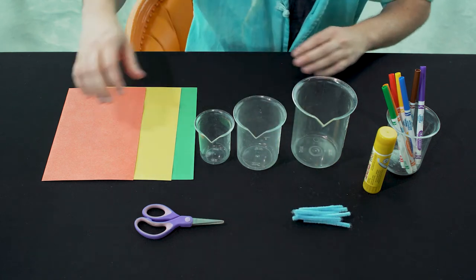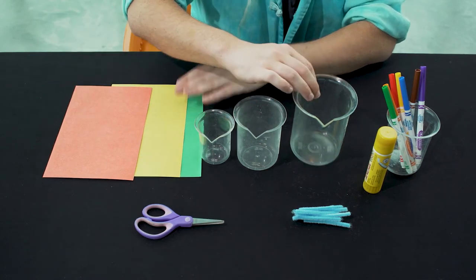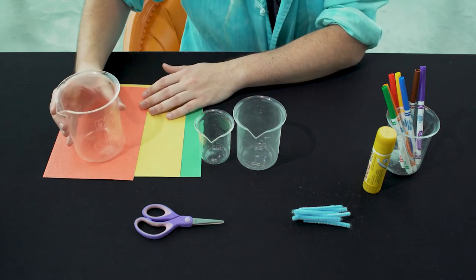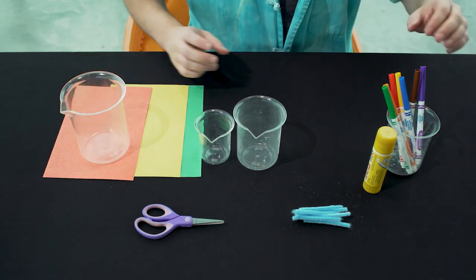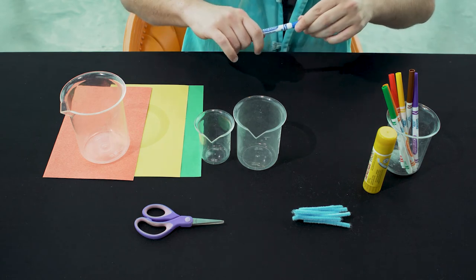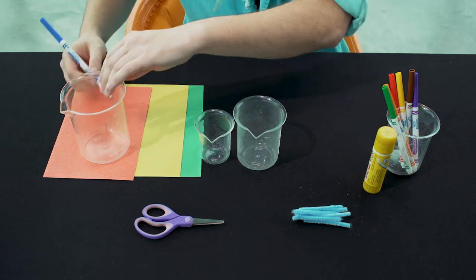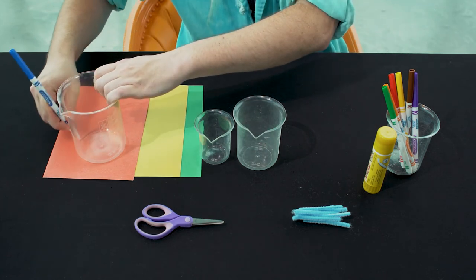To start out with, you'll want to trace three circles on your paper, and these need to be circles in three different sizes. Now, if your circle drawing skills are better than mine, you can freehand it, but I think it's easier to find three differently sized cups or jars or things like that and trace around those.